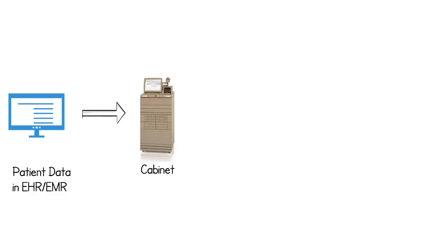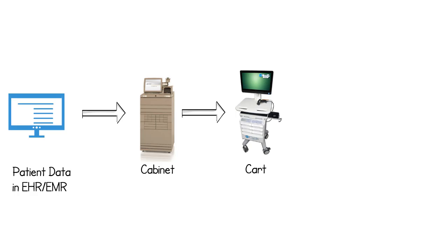Then she'll go to her cabinet — it may be a Pyxis or an OmniCell machine, there are others on the market as well. Her EHR may be on the same computer attached to that cabinet, but typically the cabinet software runs independently. She will take out the proper medication based on what is ordered for that patient. The cabinet's sole purpose is to house medications including narcotics, and it also does inventory and tracks the meds themselves. She'll choose a medication, a drawer will pop open, and she'll take that specific medication out, then put it into a cart or another device to carry to the patient's bedside.